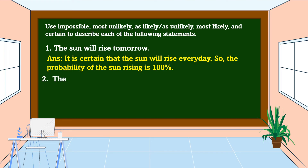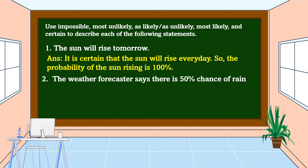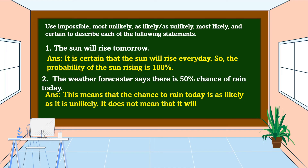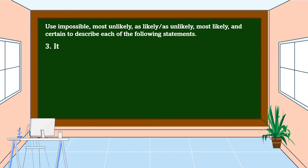Number two: the weather forecaster says there is a 50 percent chance of rain today. This means that the chance of rain today is as likely as it is unlikely. It does not mean that it will rain nor that it will not rain today.